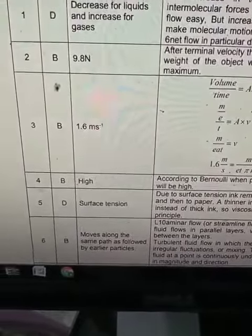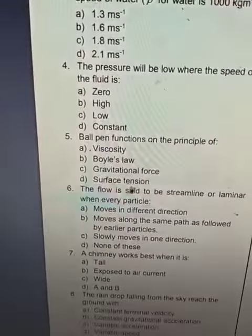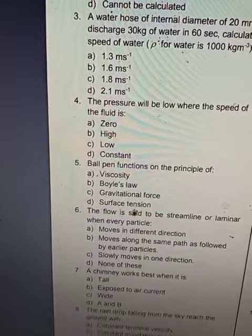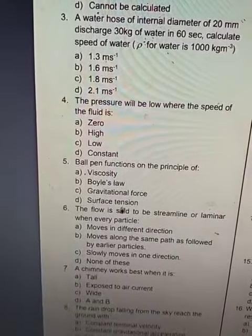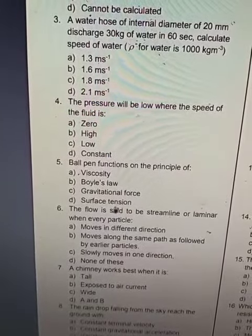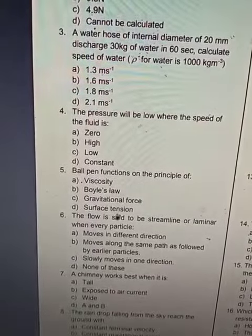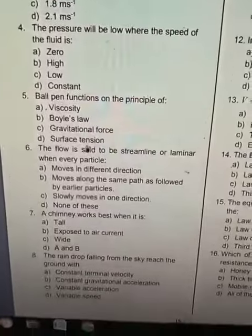Question 3. A water hose of internal diameter of 20 mm discharge 30 kg of water in 60 seconds. Calculate the speed of water. ρ for water is 1000 kg per meter cube.